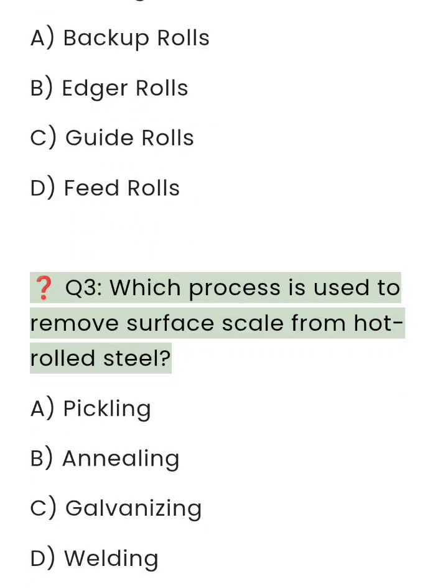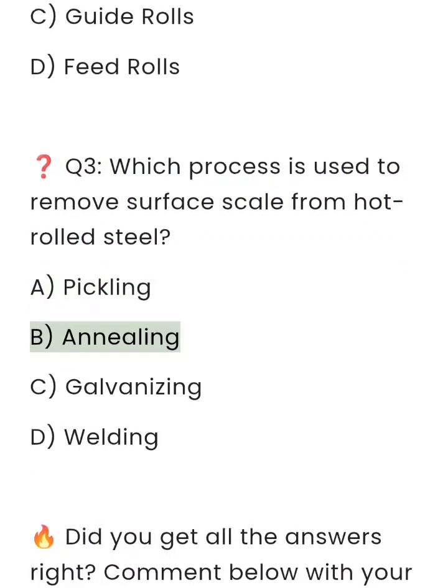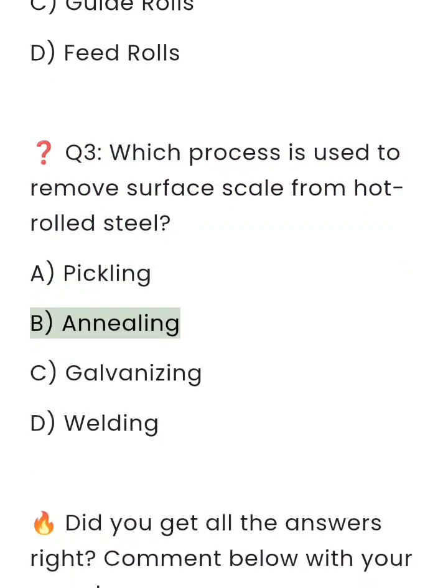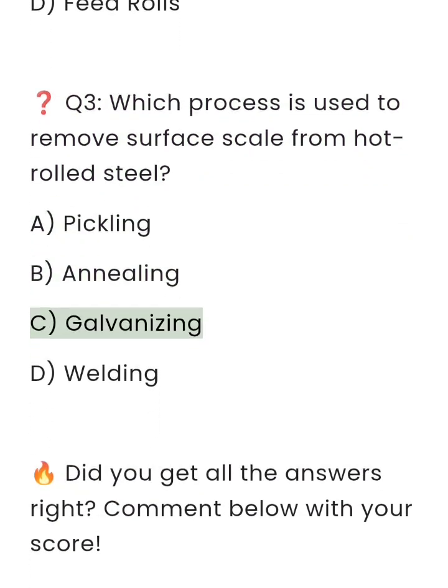Q3: Which process is used to remove surface scale from hot rolled steel? A: Pickling. B: Annealing. C: Galvanizing. D: Feeding.